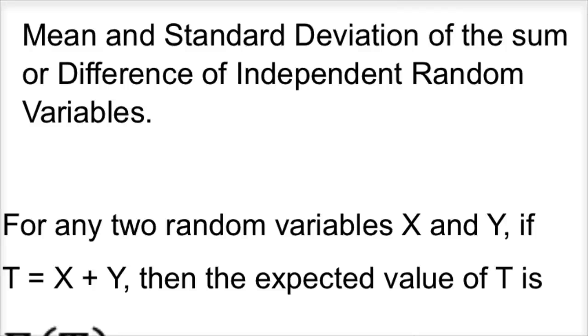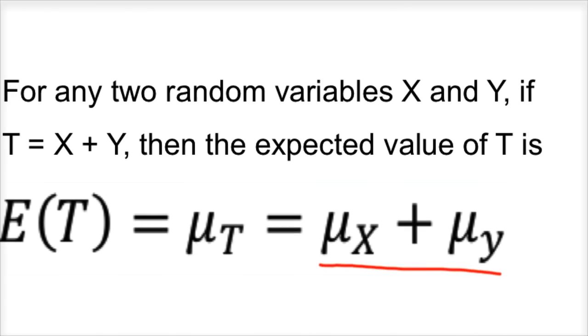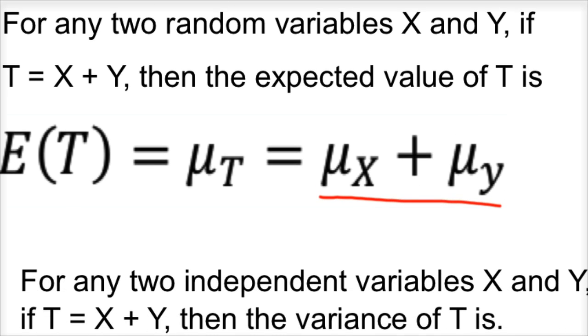Mean and standard deviation of the sum or difference of independent random variables. For any two random variables, let's say you had X and Y. If we want the total of X and Y, then the expected value of the total is just the sum of their means. So mu sub X plus mu sub Y would be the expected value of the total. It's pretty simple for mean.